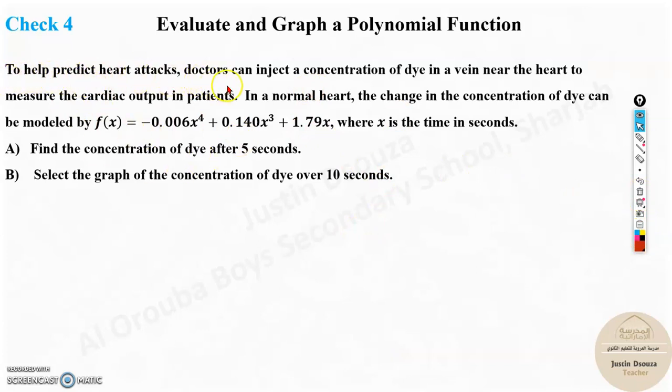To help predict heart attacks, doctors can inject a concentration of dye in a vein near the heart to measure the cardiac output in patients. In a normal heart, the change in the concentration of dye can be modeled by the function.